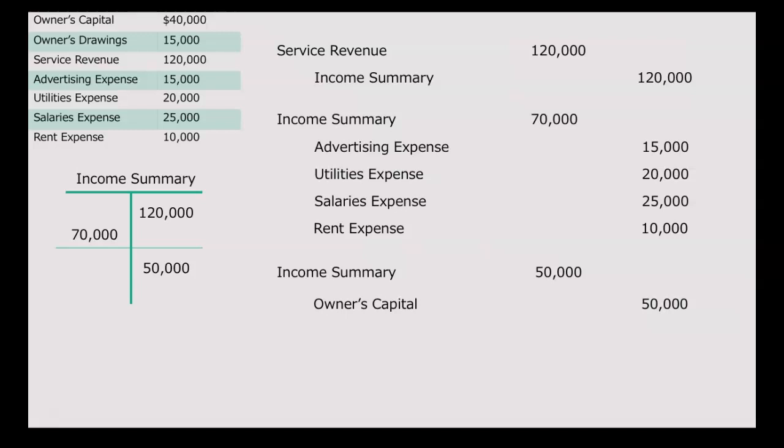That $50,000 is your net income — we found it by taking $120,000 revenue minus $70,000 expenses. Revenues minus expenses gives us net income. If we think about owner's capital, it increases with a credit. On your owner's equity statement, net income is added. So we are increasing our capital by the amount of net income, which is exactly what you would do on your owner's equity statement.